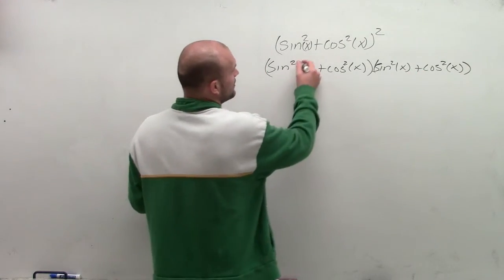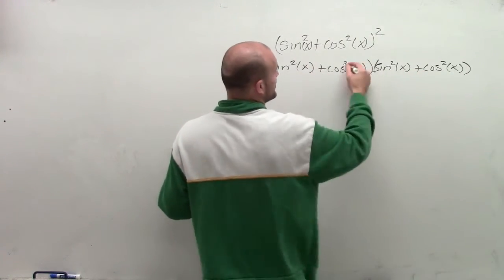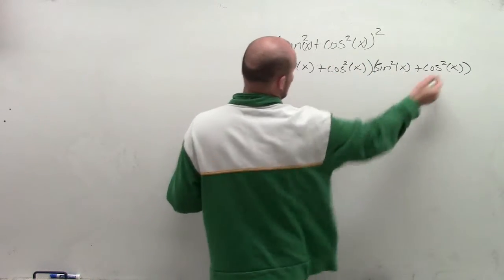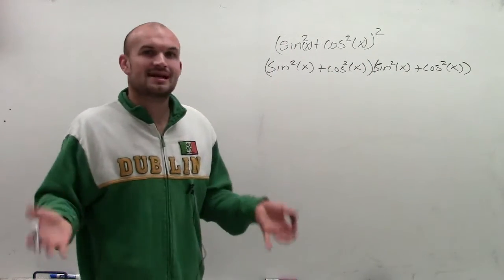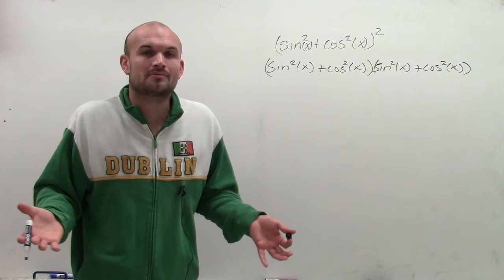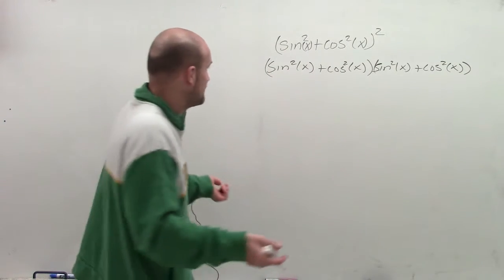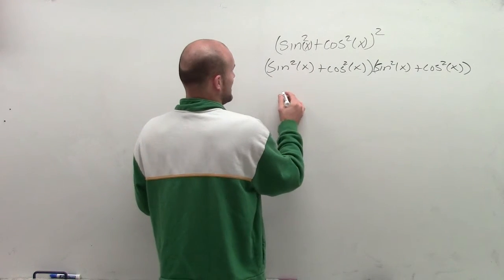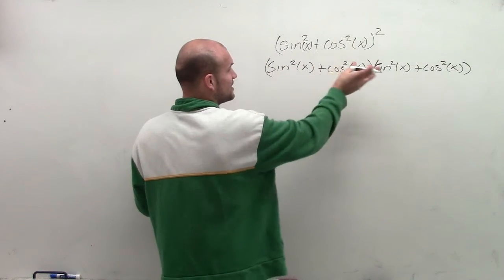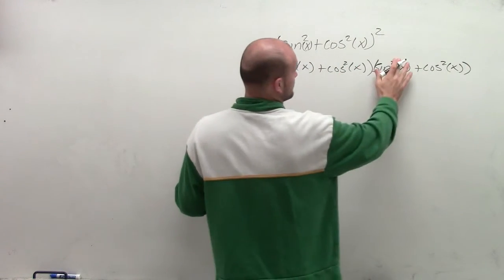Now, again, you could apply the FOIL method first, outer, inner, last. But however, like I said, I just want to apply what I'm representing multiplying it by perfect square. So therefore, I'm going to have sine squared times sine squared.